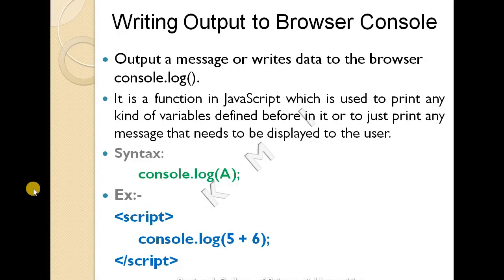The first method is browser console output. Console.log is a function in JavaScript which is used to print any kind of variables defined before, or just print any message that you need to display to the user. The syntax used is console.log.